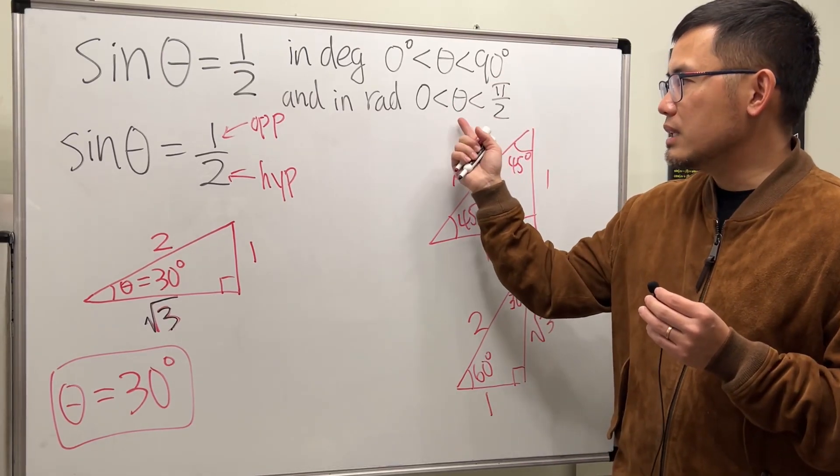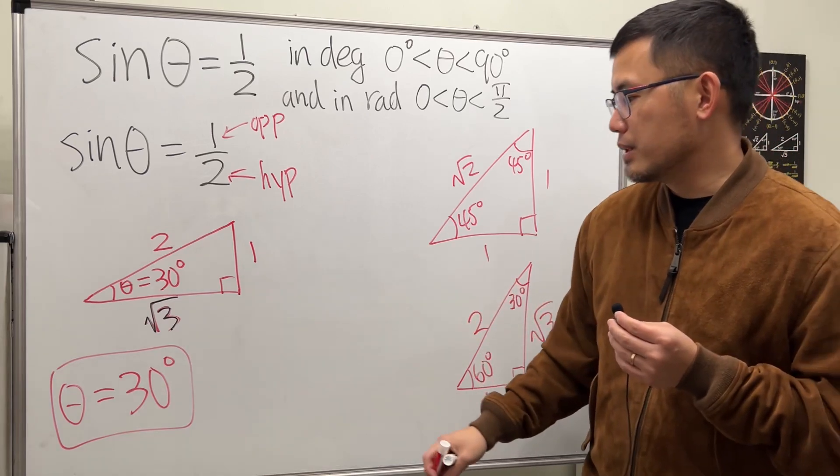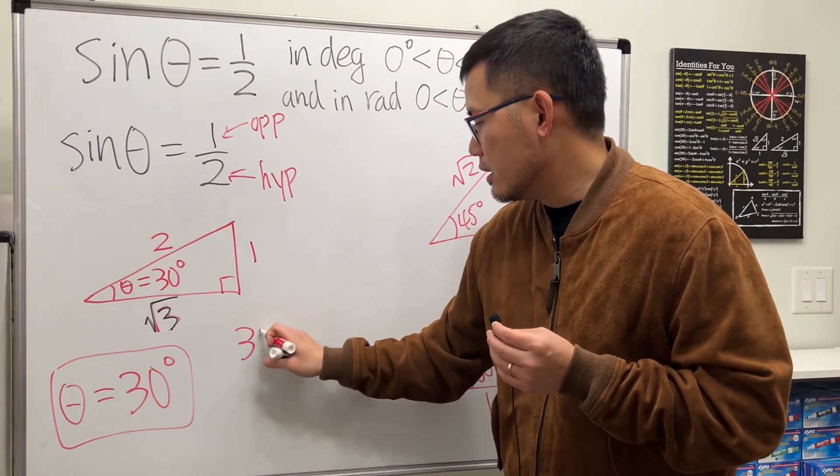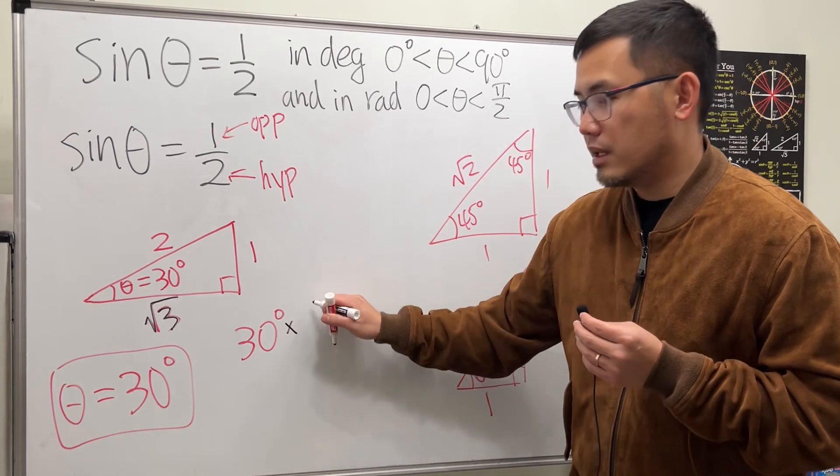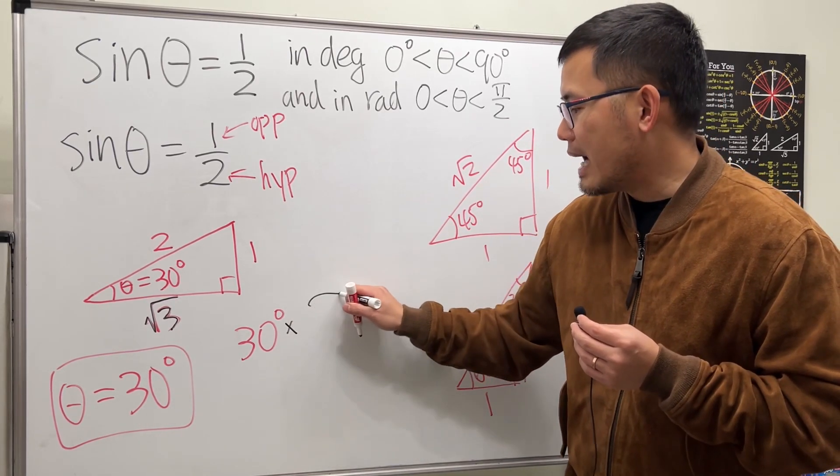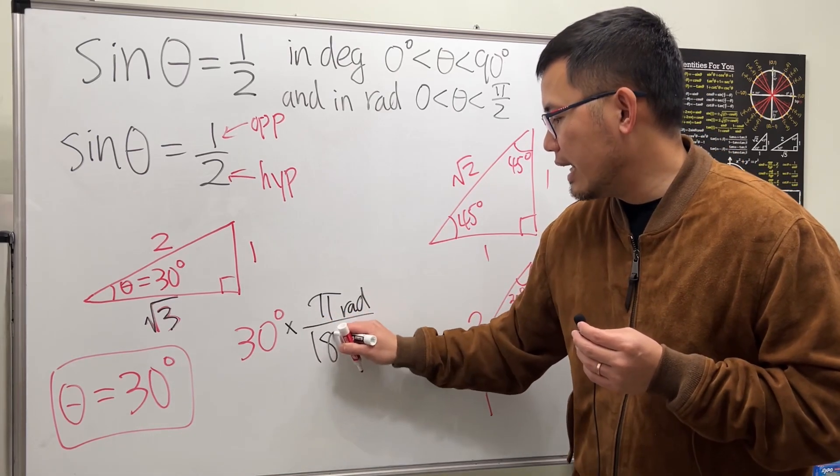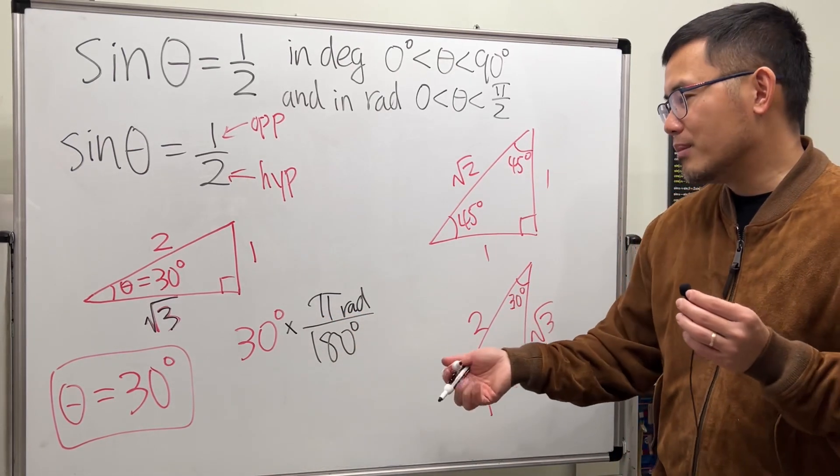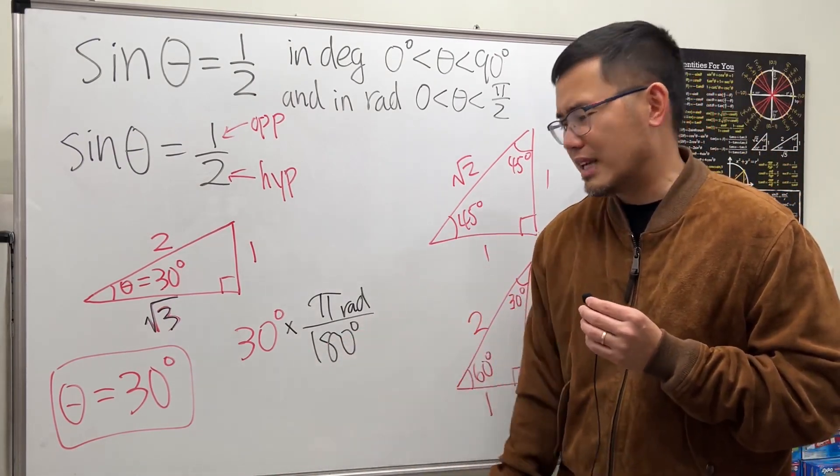Now we will also have to give the radian answer for this. And this is how we are going to do it. When we have degree measure, we are going to multiply this by pi radian over 180 degrees. And I would recommend you to work with degrees first and then just change it to radian. It's easier that way.